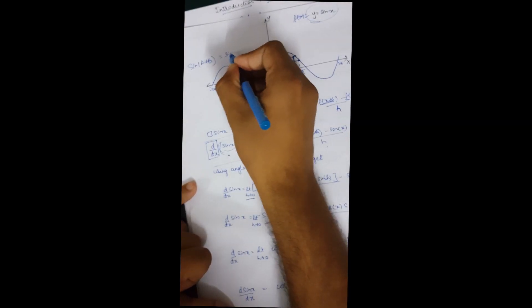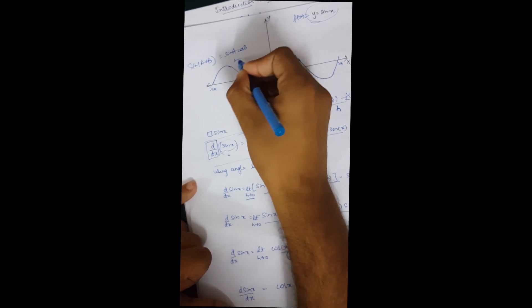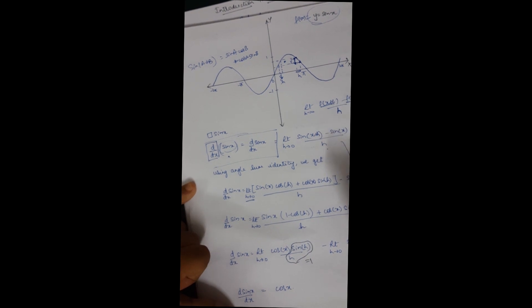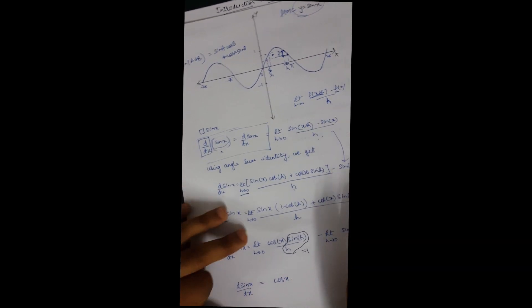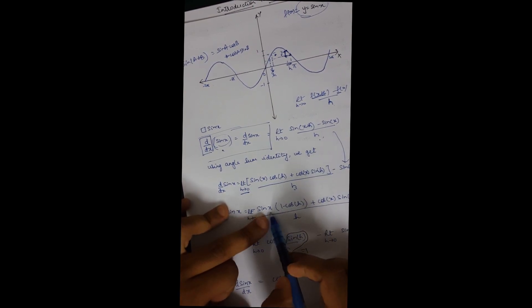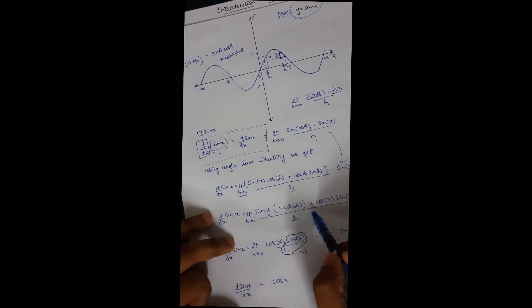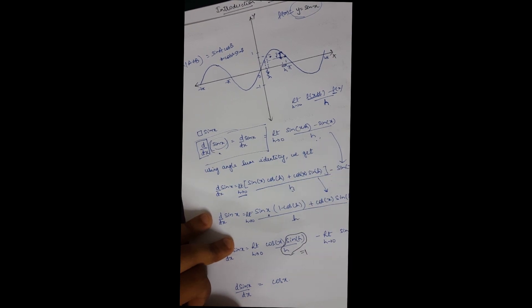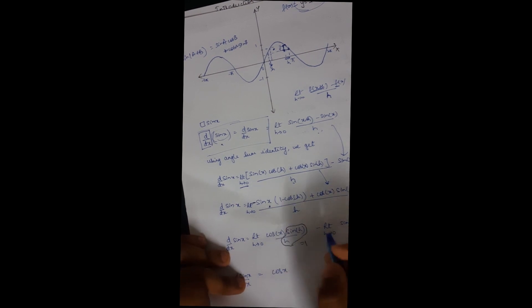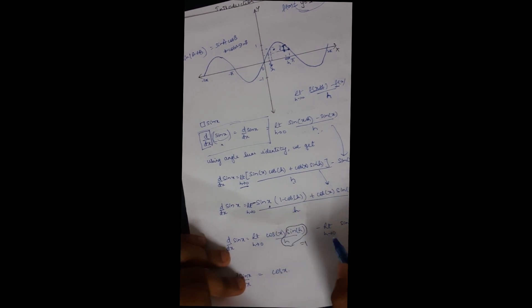sin(x+h) equals sin(x)cos(h) plus cos(x)sin(h). So the expression becomes [sin(x)cos(h) plus cos(x)sin(h) minus sin(x)] divided by h. Taking minus sin(x) common gives 1 minus cos(h). We can split these terms into: limit cos(x) times sin(h)/h minus limit sin(x) times (1 minus cos(h))/h.